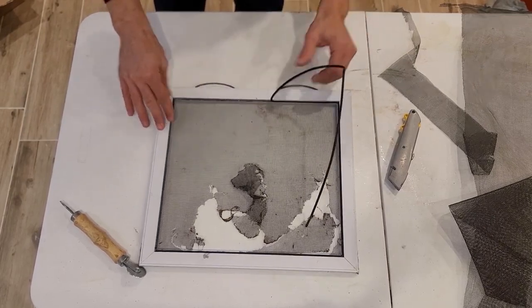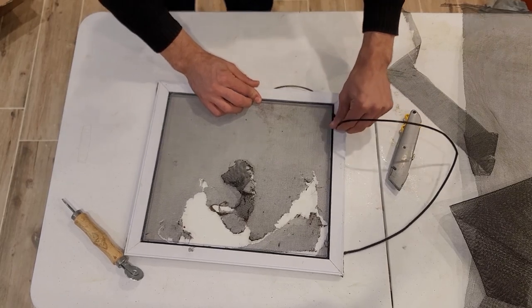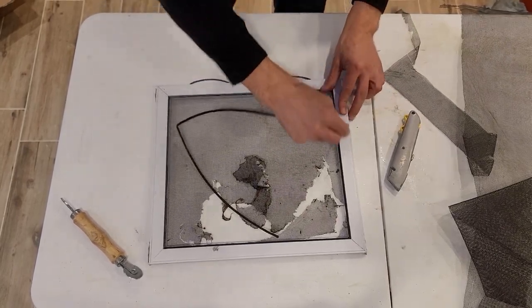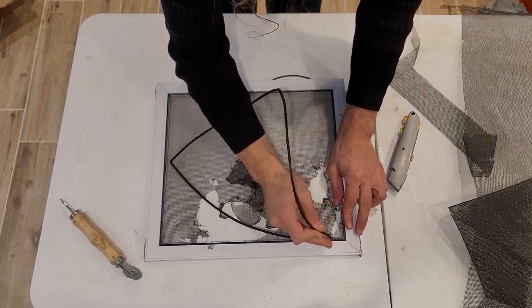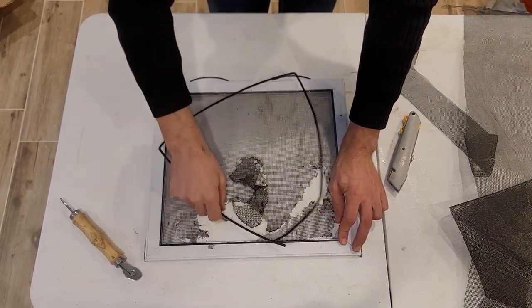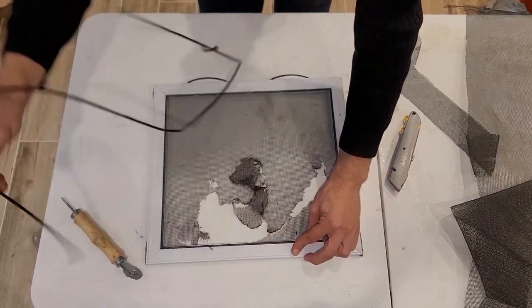Now, depending on the condition of your spline, it may either come apart owing to it having a ton of UV damage and being old, or if it's still fresh enough, it may come out in one piece like this. If it does come out in one piece, lucky you, you won't have to replace it.